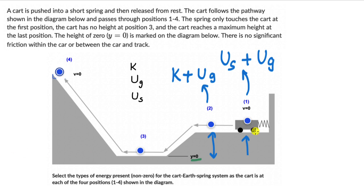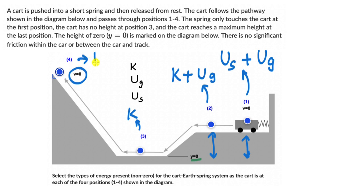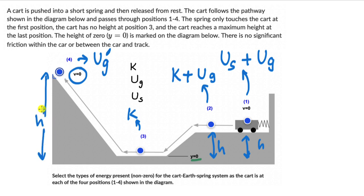At position 3, the cart is still moving. But there is no gravitational potential energy because it is at y equals zero. So it is just the kinetic energy of the cart, and the spring is not compressed so there is no elastic potential energy. At position 4, velocity is zero so there is no kinetic energy, and there is no elastic potential energy. All that there is, is only gravitational potential energy — and this is at a much, much greater height, which we can call H dash.